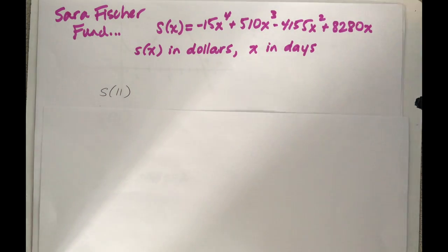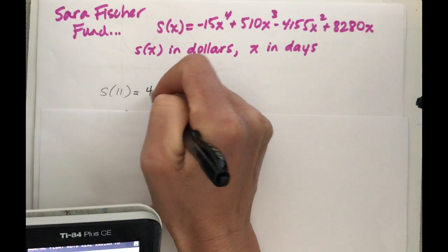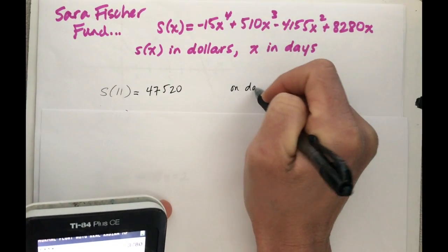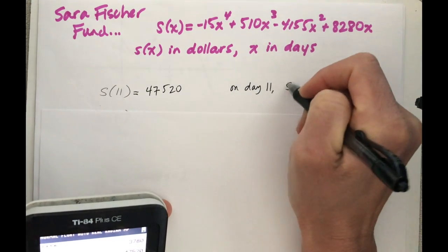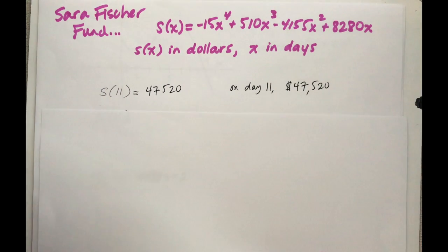The first expression I have to find here is s(11). So if I throw the function in my calculator, s(11) is gonna give me 47,520. So this means on day 11 I have $47,520.